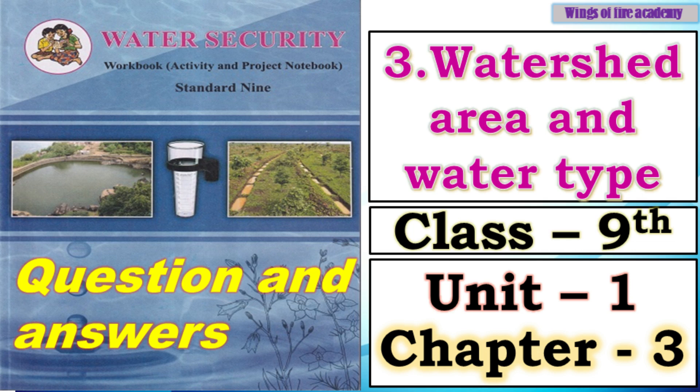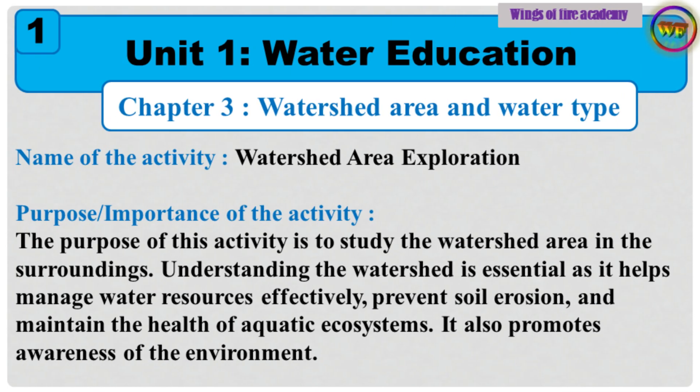Hello dear students. Today we will solve questions from Class 9th Water Security Workbook, Unit Number 1, Chapter Number 3: Watershed Area and Water Type. So let's start. Class 9th Water Security, Unit 1, Chapter Number 3 — Watershed Area and Water Type, Question and Answers.